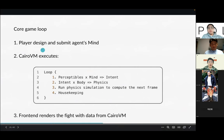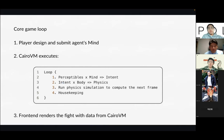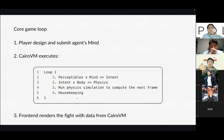The game is played by you as a player designing and submitting a mind. In the Cairo VM — a smart contract running on StarkNet — every single frame it does the following four things: it takes perceptibles from the environment into the mind and computes; the result is intent — what the mind wants to do; the intent drives the body, resulting in the body moving around according to physics; then some physics simulation is carried out, where bodies are punching each other or moving according to friction and gravity. Housekeeping tracks each player's health points and stamina, then you loop these four steps every single frame until someone wins or the round ends.